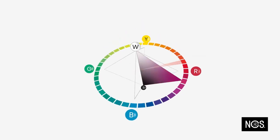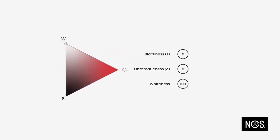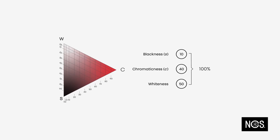For each hue in the NCS color circle, you have an NCS color triangle that describes the nuance, the relation between white, black, and the most chromatic point of the selected hue. The sum of the nuance is always 100%. In the case of our flamingo, it has 10% blackness, 40% chromaticness, and 50% whiteness.